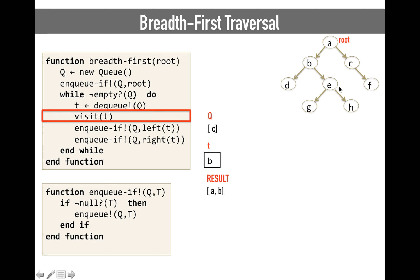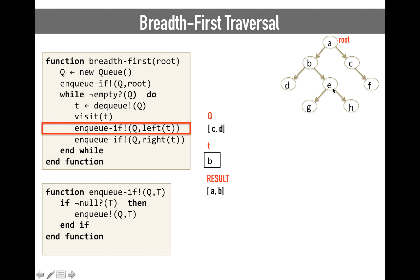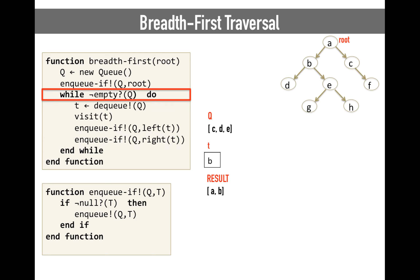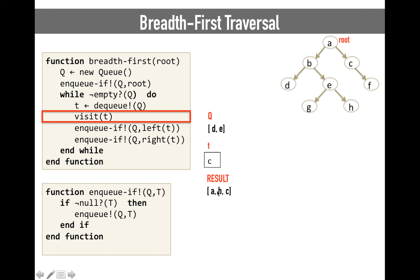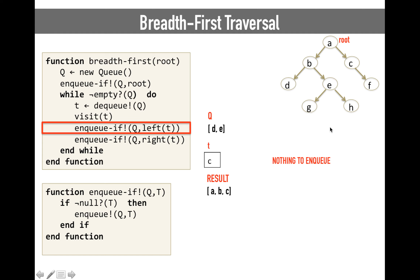We go back to check if we still have elements in the queue — we do, so we dequeue the first, which is B. We visit B, and then we enqueue the children of B, preparing to visit the next level. So we enqueue D and E. Then we check if we still have elements in the queue — we still do, so we dequeue the next, which is C, and we visit it. We are forming our traversal here: A, B, C. Then we enqueue the children of C. There's no left child, so nothing to enqueue there, but there is a right child, so we enqueue F.